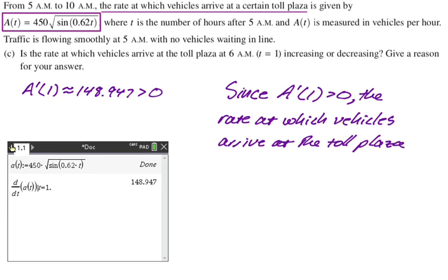Since A prime of 1 is greater than 0, the rate at which vehicles arrive at the toll plaza, A(t), is increasing at t equals 1. And then t equals 1 was 6 AM.